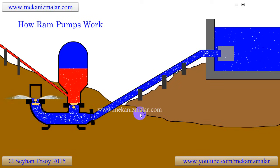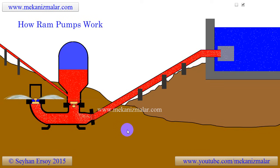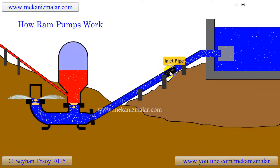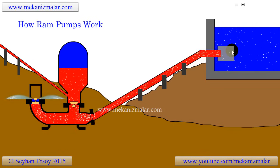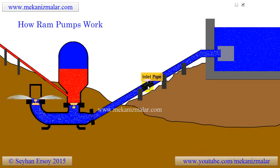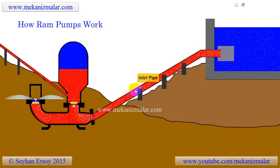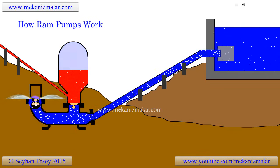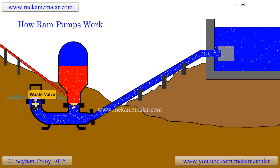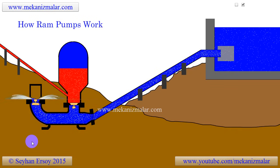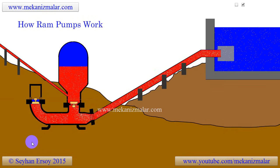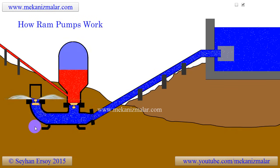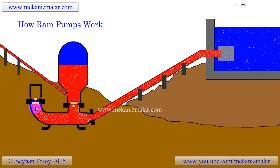Here is how this ingenious mechanism works. The water flowing from higher elevation is fed to the ram pump through inlet pipes. Since the waste valve is initially open, the water begins to flow outward at high speeds and is discarded to the environment. This causes the pressure around the waste valve to drop and shuts it quickly.